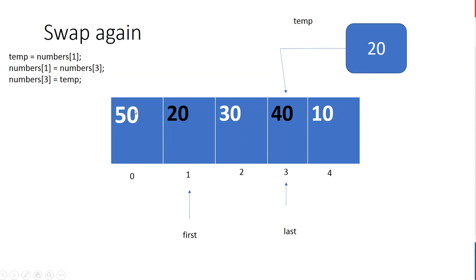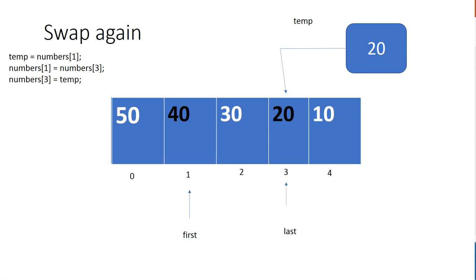We no longer want to hold on to whatever was in index zero — those two ends are done. We've incremented 'first' and decremented 'last' by one. Now we store whatever is in element one into temp, then we go along the same routine: we put 20 over in element three, index three, and copy element three's original value — 40 — into index one.